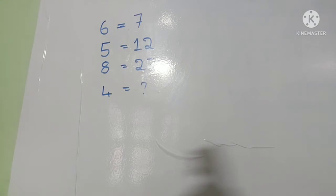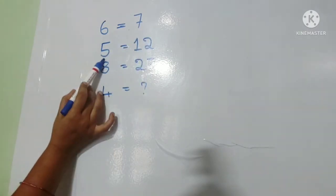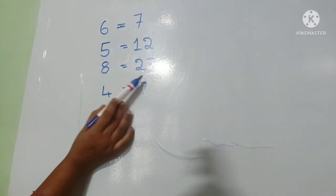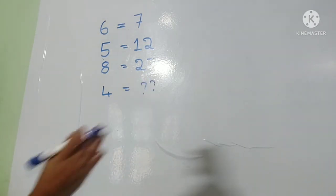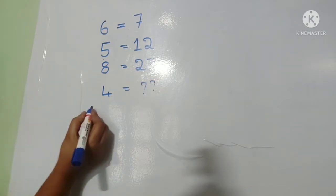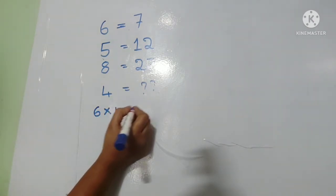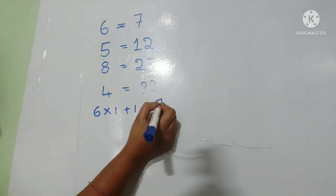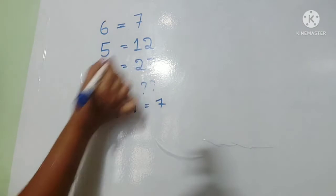Hi friends, good morning, welcome to our channel. If you know that 6 equals 7, 5 equals 12, 8 equals 27, 4 equals question mark. So friends, 6 equals 7: six into one plus one equals seven. Next, 5 equals 12.